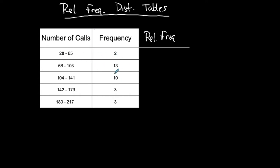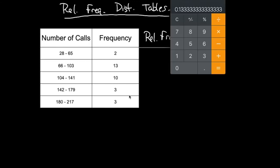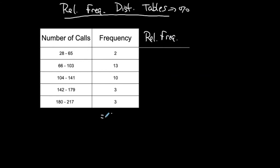Relative frequency can be expressed as a decimal or a percent. First, I need to know how many total data values are in this data set. To do that, I add up all the frequencies: 2 plus 13 plus 10 plus 3 plus 3, giving me a total of 31 data values.